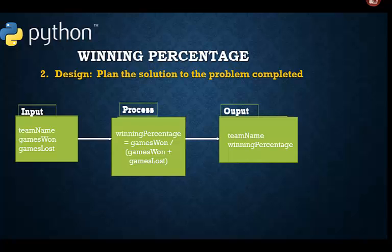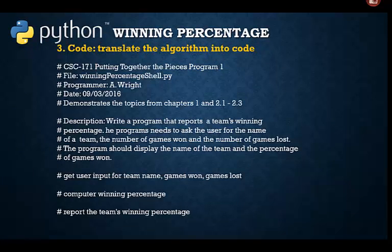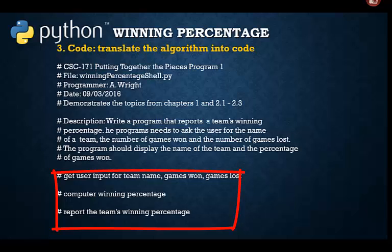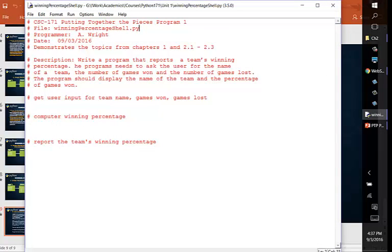Okay, we are ready to move to step 3 in the program development cycle: coding. Here is a Python program shell for coding the solution. Notice the liberal use of comments. You should always include your name, date, and the program description at the top. It's also good to list the name of the file. You should add comments to each section of the program as we see here. It will help us translate the design into the Python code we need. You should download and open the winning percentage shell program as we work through phase 3, coding.